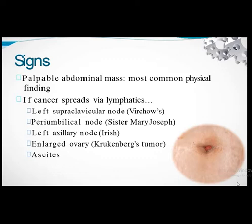Signs are typically absent in early disease, but in later stages one may find a palpable mass in the epigastric region, a palpable Virchow's lymph node (left supraclavicular), a periumbilical nodular swelling known as the Sister Mary Joseph nodule indicating widespread or intraperitoneal tumor spread, an Irish lymph node (left axillary), Krukenberg's tumor (palpable ovarian masses in females with gastric cancer), and ascites in advanced stages.